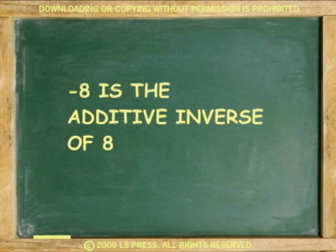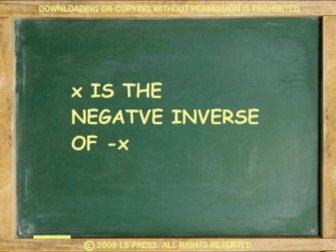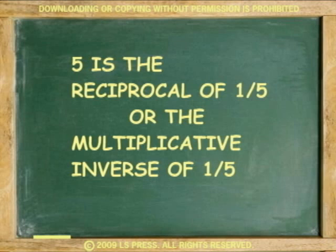So, negative 8 is the additive inverse of 8. And x is the negative inverse of negative x. And 5 is the reciprocal of 1 over 5. Or we can call it the multiplicative inverse of 1 over 5.